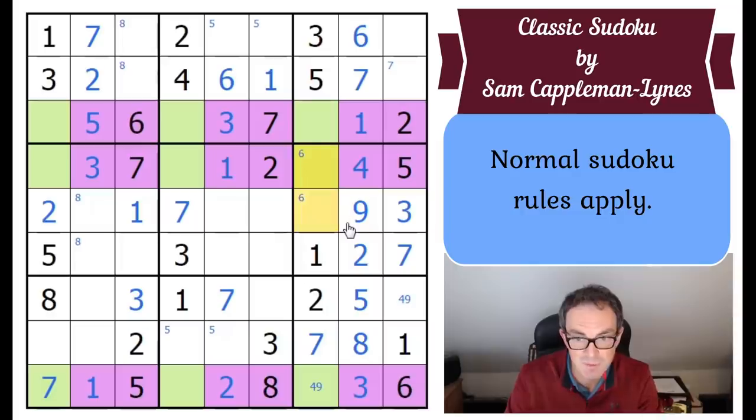These two squares have got to be a 6, 8 pair to complete this box. Now, can we keep going and keep the momentum up here? It was really going quickly for a moment or two. Yes, we can. Look at row 9 of the grid. We need to put 4 or 9 into that square. And that one is a 4. So we've got to go 9 here.